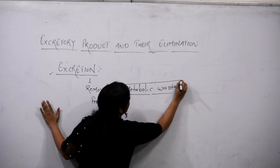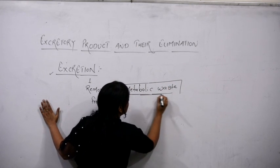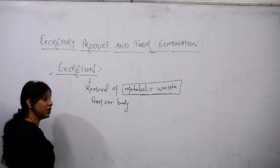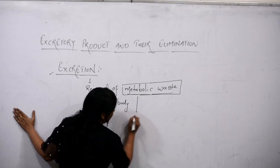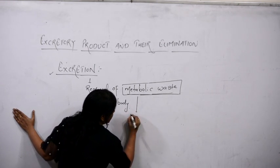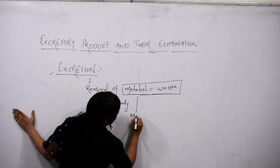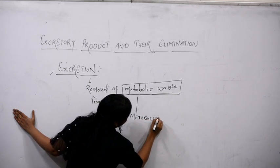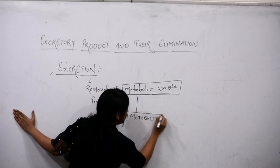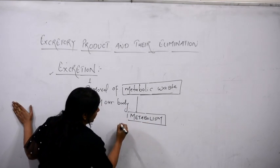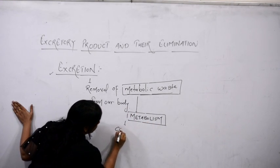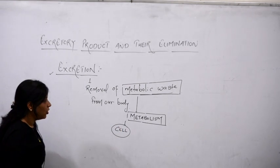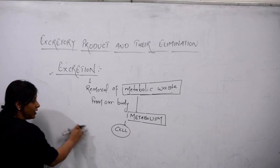The question is: how are these metabolic wastes produced in our body? Simply, these metabolic wastes are produced in our body due to the metabolic activities, which are known as metabolism. Metabolism is occurring inside the cell, because as we know, the cell is the fundamental unit of life and all the activities are occurring inside the cell.